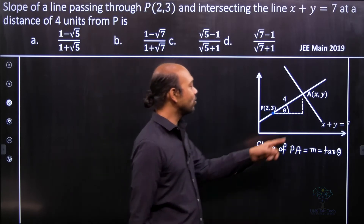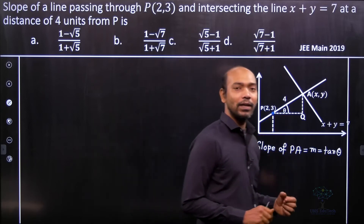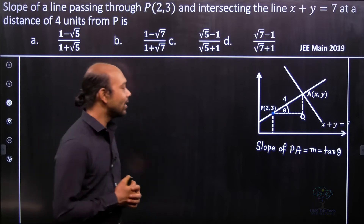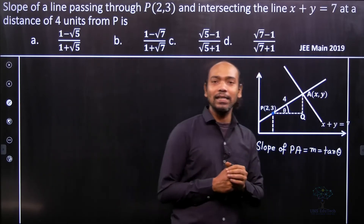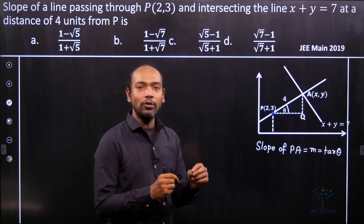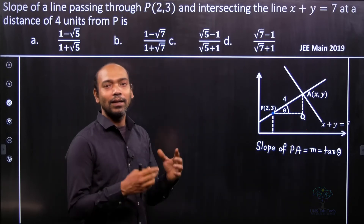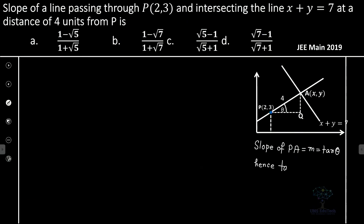To do so, we drop a perpendicular AQ. Now why do we drop a perpendicular? So that we can calculate tan θ directly. Triangle APQ is a right-angle triangle, and in this right-angle triangle we need to find tan θ, which is equal to AQ divided by PQ — the opposite and adjacent sides. So therefore, tan θ from the figure is equal to AQ divided by PQ.